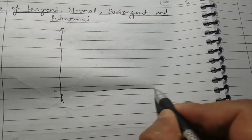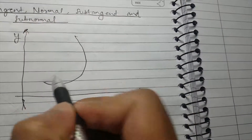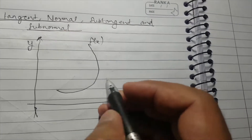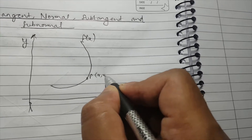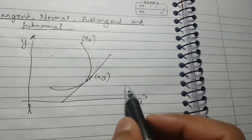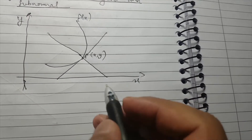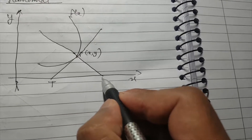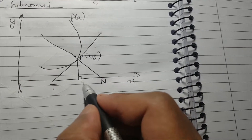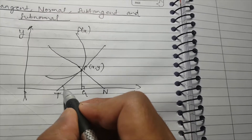Let us draw a graph first — this is your x-axis, this is y, and our graph is like this. This is f(x). Now let us consider a point P(x, y) on the curve. The normal will be at right angles to the tangent. Let us label the point where the tangent meets the x-axis as T, and the point where the normal meets the x-axis as N. Let me draw a perpendicular from P to the x-axis and call it G. Let us call this angle theta.